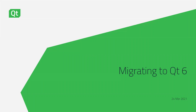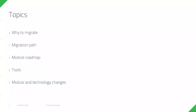Hello everyone. The topic for today is to discuss migrating to Qt6, as the version has been out for a couple of months and new versions are coming. So it's time to discuss when and how you would migrate to the new version. Here is a list of topics we'll go through: the motivation for why you should migrate, a practical migration path to Qt6, module roadmaps, the tools you need, and technology or module changes you'll need to address.